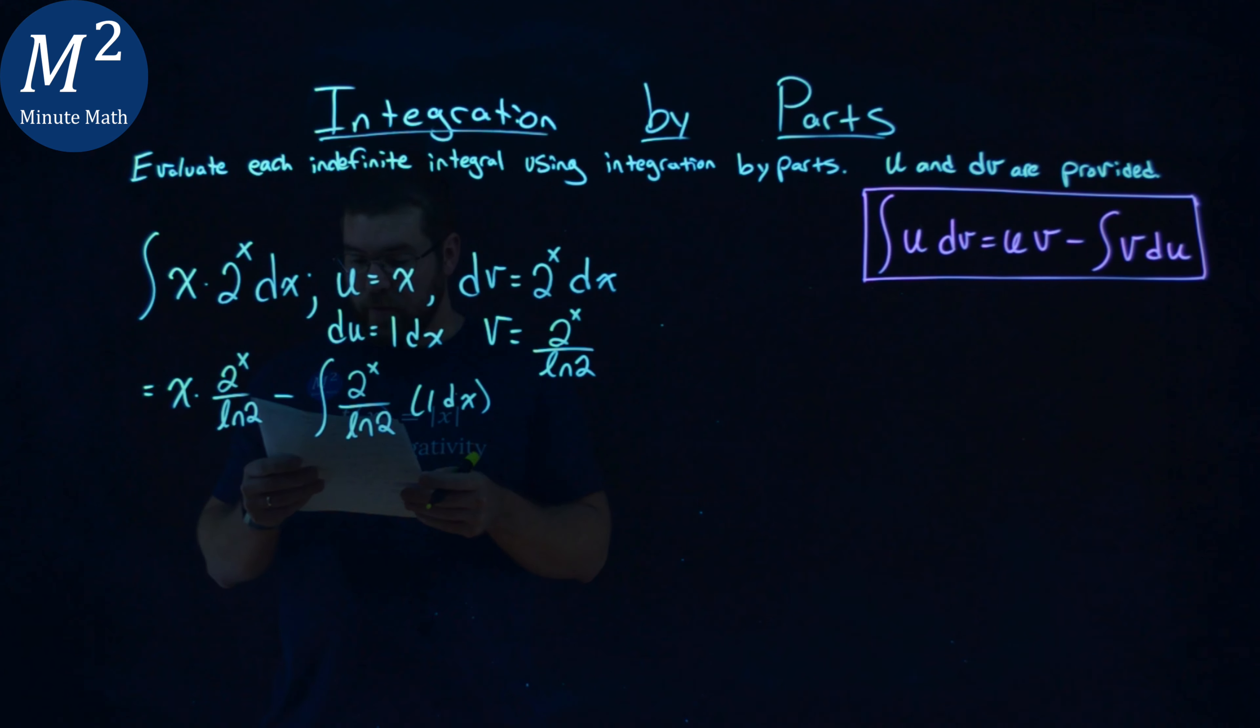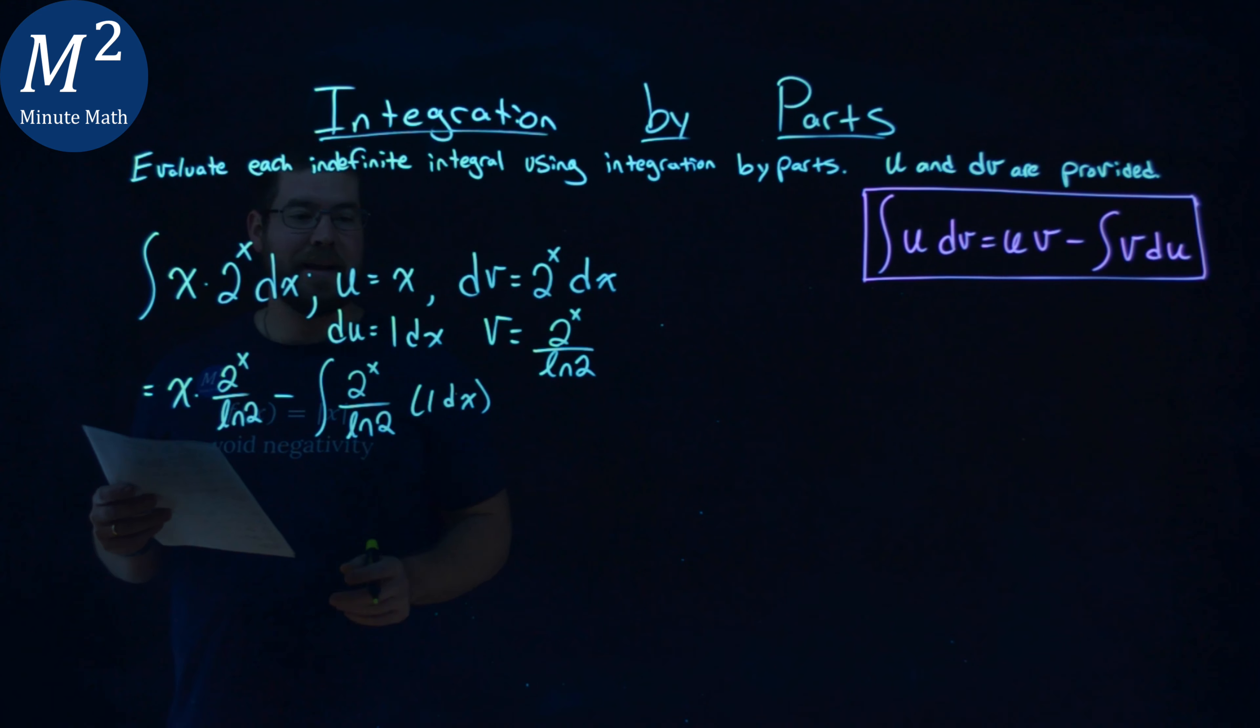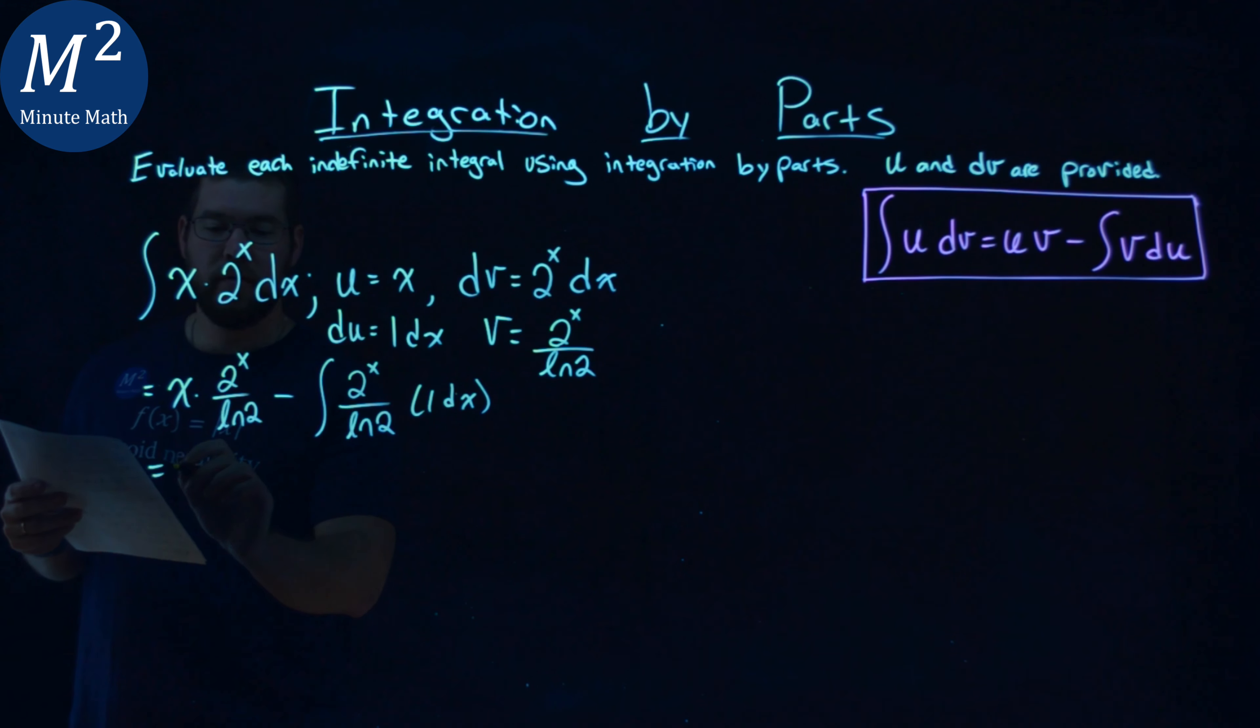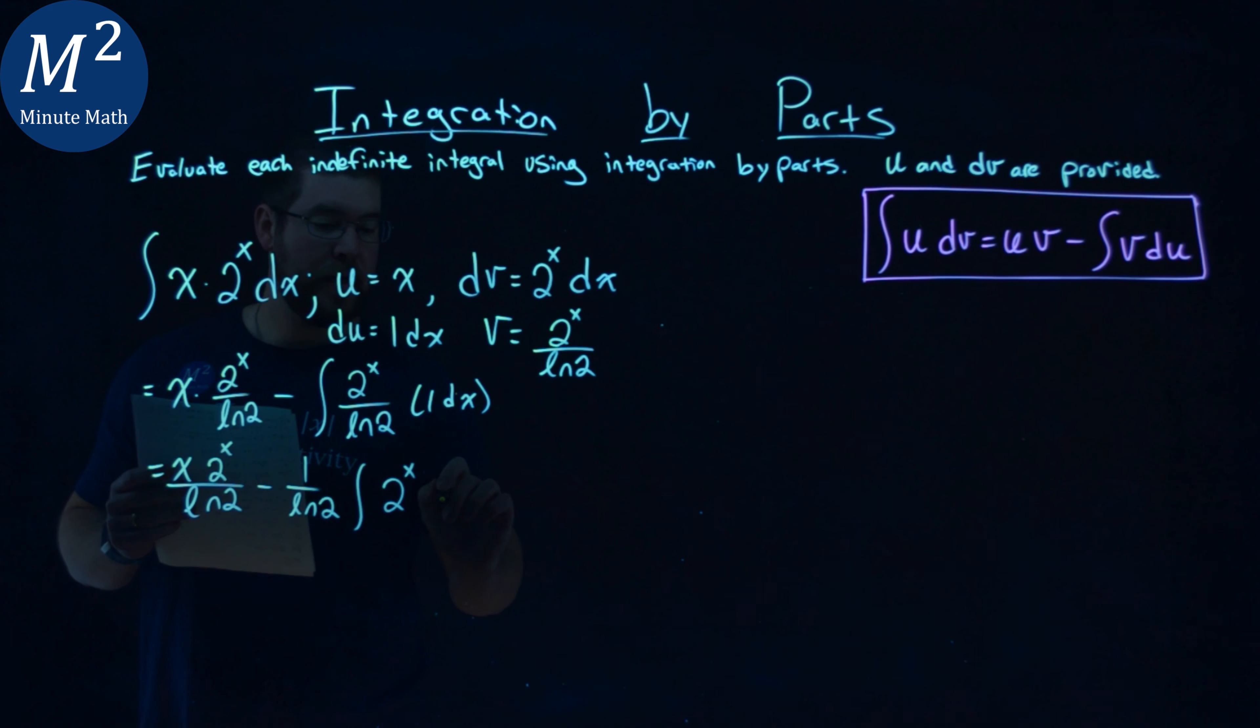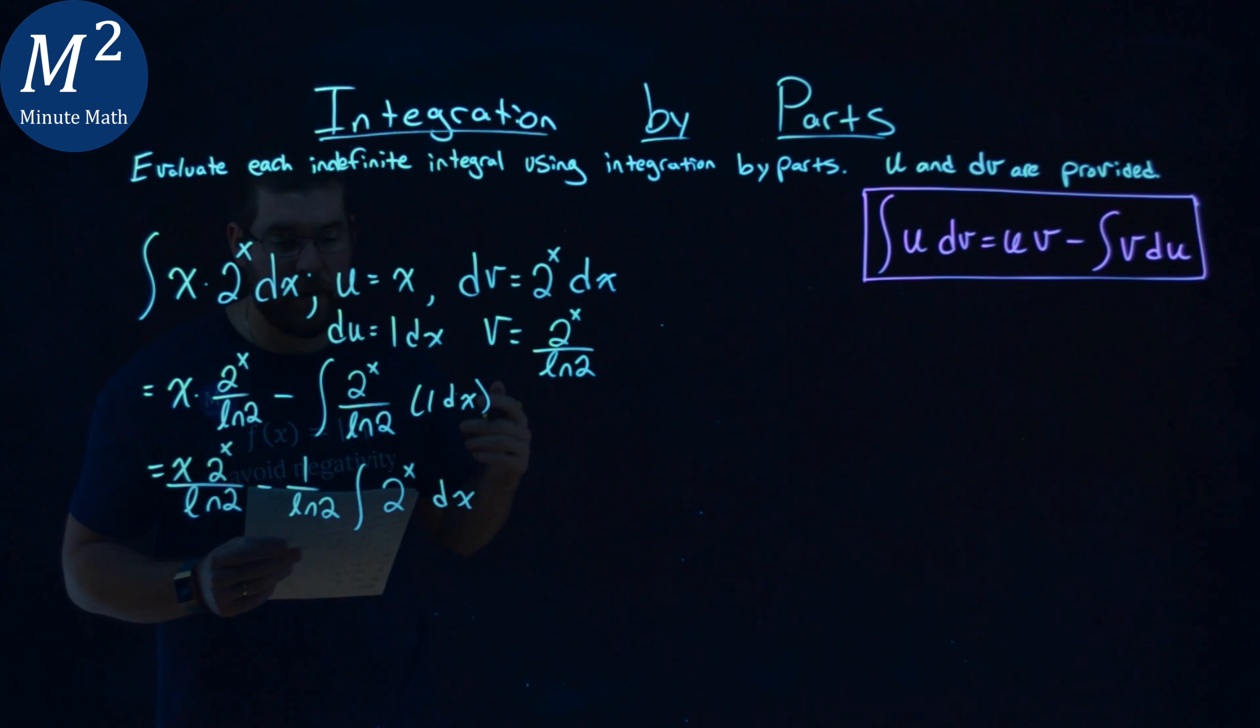All right. So, then from here, we're going to try to take that integral right there. I'm going to pull out that constant right here. So, we're going to rewrite this. We have x, 2 to the x power, over the natural log of 2. I combine that, minus, I'm going to pull out the natural log of 2, make it a little easier to see, times the integral of 2 to the x power, dx.